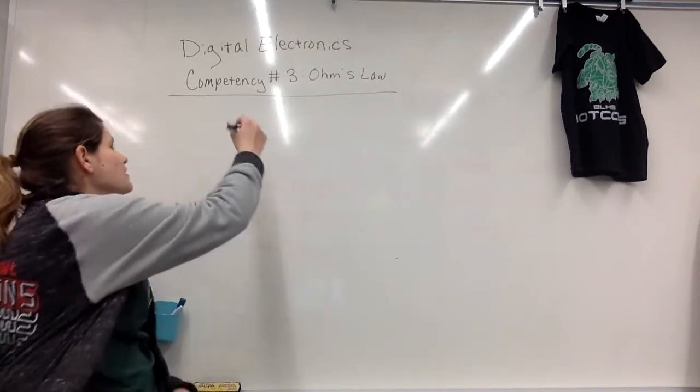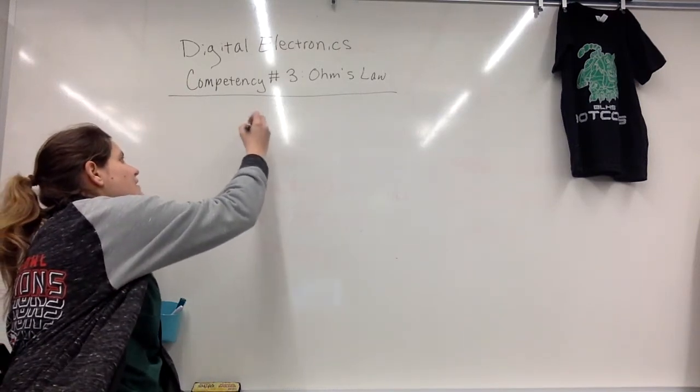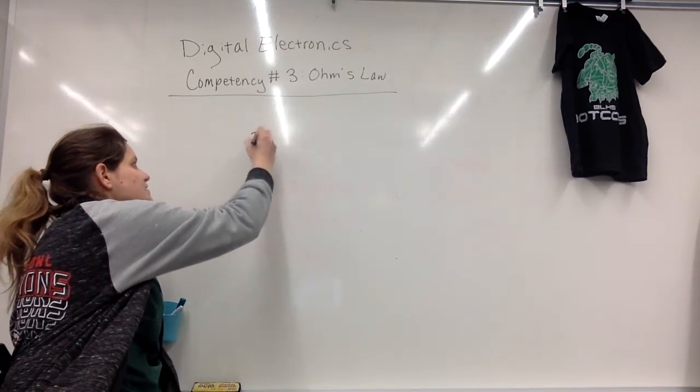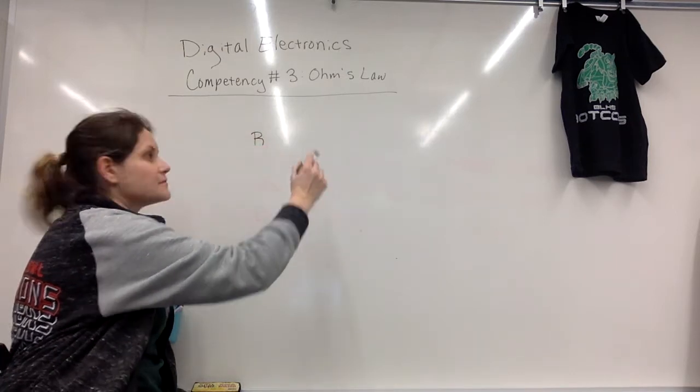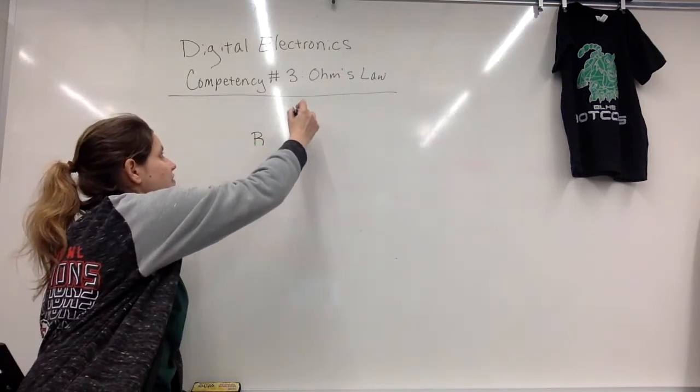What we're seeing is if we have a small amount of resistance, our brightness, meaning our current, is very, very large.